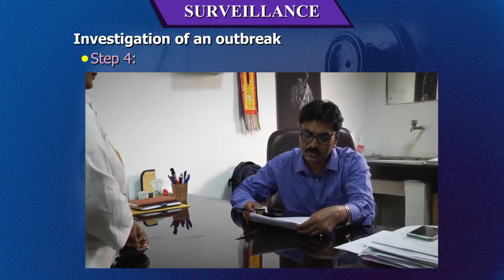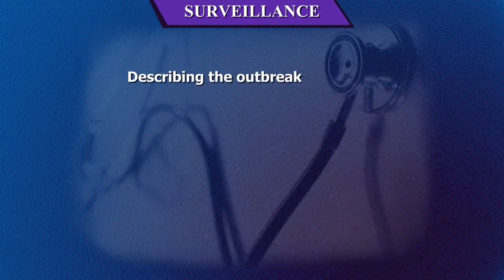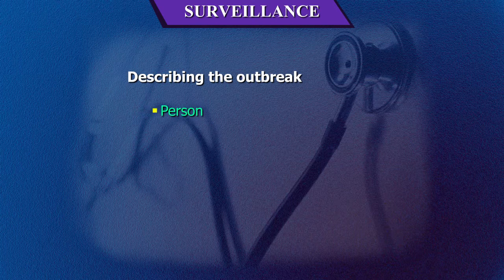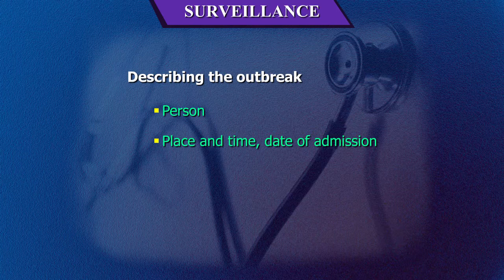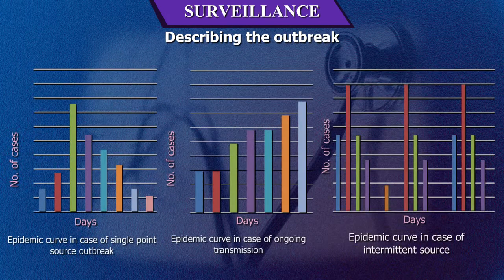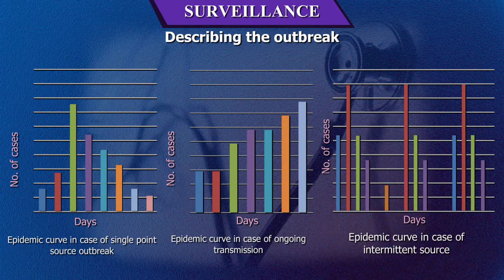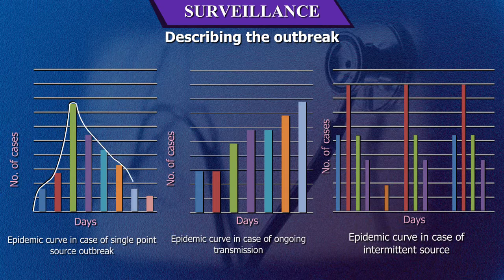Departments involved in the outbreak and administration should also be informed. Describing the outbreak: the detailed description includes the person(s), place and time, date of admission, gender, age, etc. An epidemic curve may be plotted — a graphic representation of the distribution of cases by time of onset. It should distinguish between definite and probable cases. The shape of the epidemic curve may suggest a single point source, ongoing transmission, or an intermittent source.